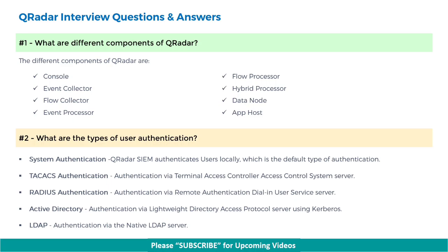Next, what are the types of user authentication? The different types are: System authentication, where QRadar SIEM authenticates users locally — this is the default type. Next is TACACS authentication, via Terminal Access Controller Access Control System Server. Next is RADIUS authentication, via Remote Authentication Dial-In User Service Server. Next is Active Directory, authentication via Lightweight Directory Access Protocol Server using Kerberos. And lastly, LDAP — authentication via the native LDAP server.